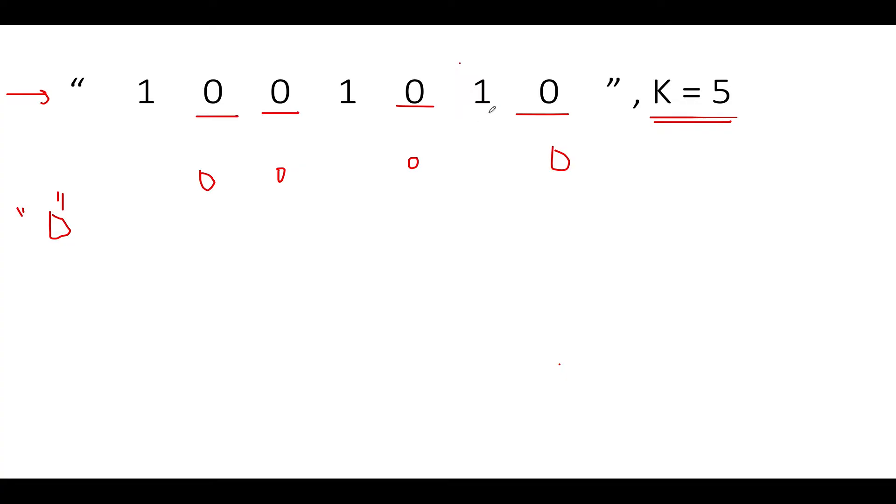Let me write the corresponding weight each position carries. This position carries a weight of 2^0, this carries 2^1, this carries 2^2, this carries 2^3, this carries 2^4, this carries 2^5, and this position carries 2^6. We'll start iterating from the rightmost terminal towards the leftmost terminal and keep adding ones until the total number is less than or equal to K.